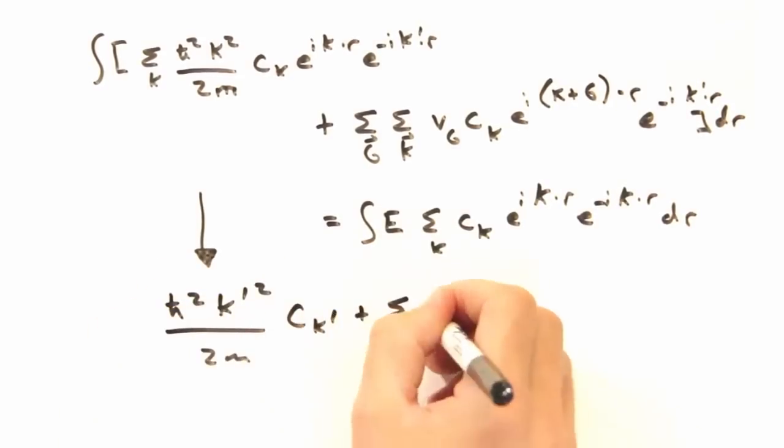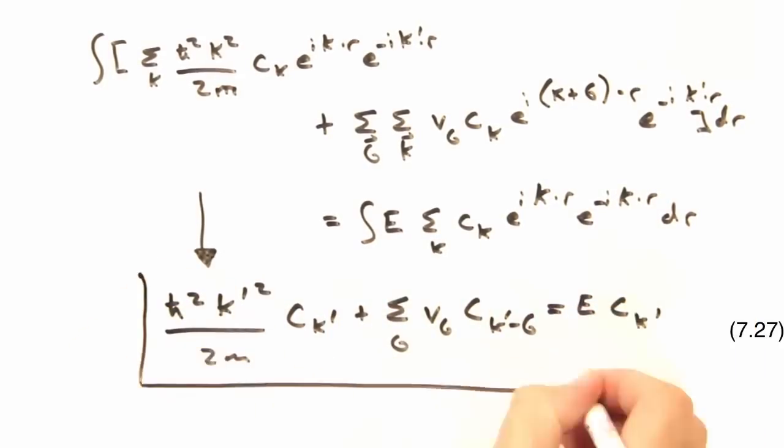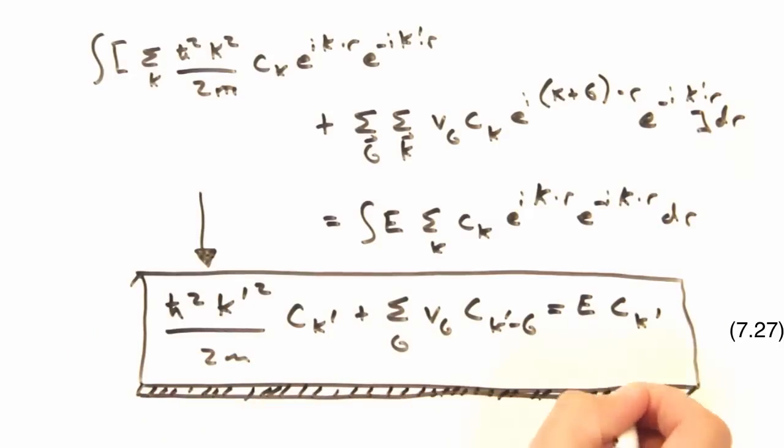So now we can drop this whole summing business in k. And since we no longer have a sum to deal with, we can drop the prime and leave k prime as just k. And we call this equation the central equation. Now this is a really profound equation, important enough to be doubly underlined and starred. If nothing else, the take home of today is to understand the implications of this equation on our wave function and the energy of our system.